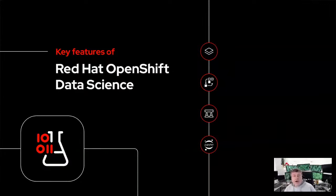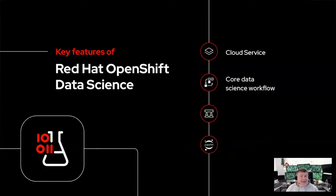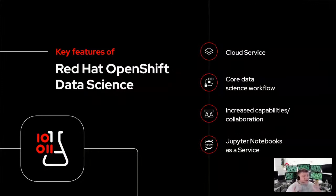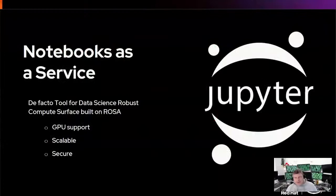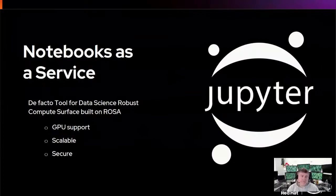Let's talk now about something a little nearer and dearer to my heart: Red Hat OpenShift Data Science. It is a cloud service that provides the core data science workflow on top of ROSA, or Red Hat OpenShift. You have increased capabilities and collaboration — essentially it's Jupyter Notebooks as a service. It provides a robust, scalable, GPU-supported environment to do compute. Data scientists don't have to think about the infrastructure; IT operations are left to AWS and Red Hat. This is really a win-win for everyone.